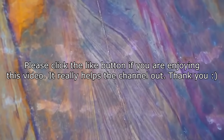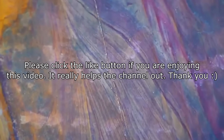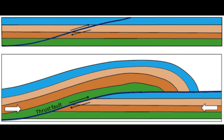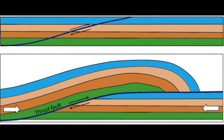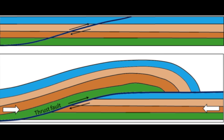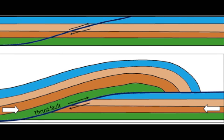The intense pressure and heat transformed sedimentary and volcanic rocks into metamorphic rocks like schists and gneisses. The orogeny led to the development of thrust faults and tight folds, creating complex geological structures. These features are indicative of the intense compressive forces at play during the orogeny.